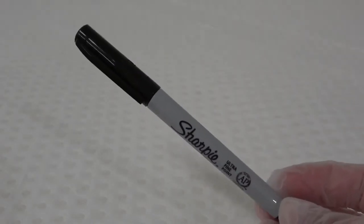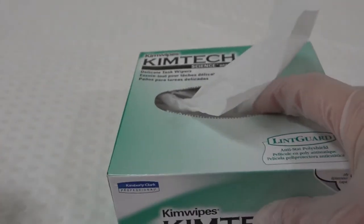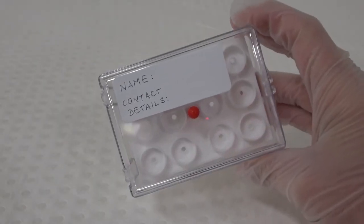A small spatula, a fine permanent marker, gloves, foil or low lint lab tissue, and a SEM sample storage box.